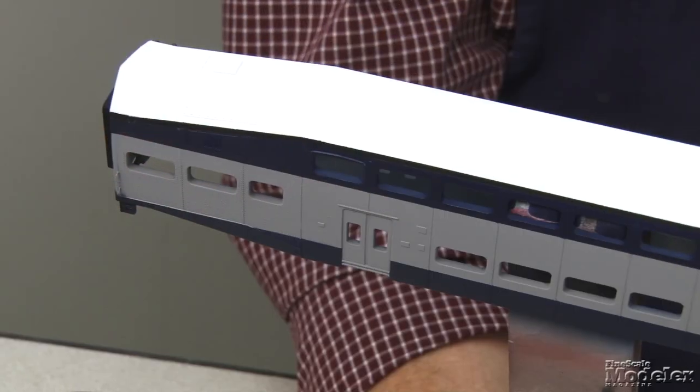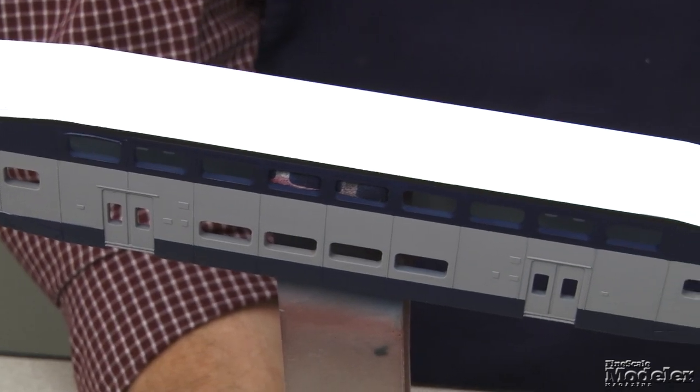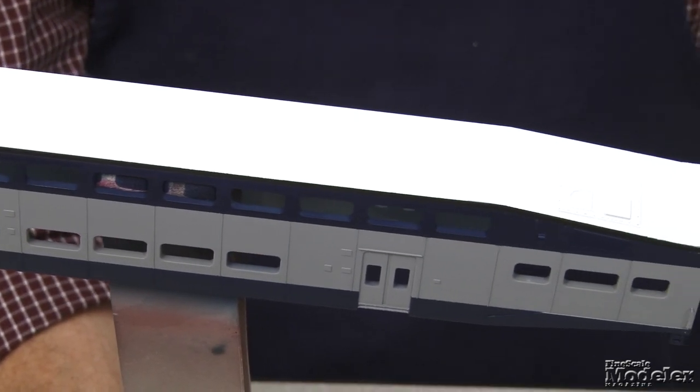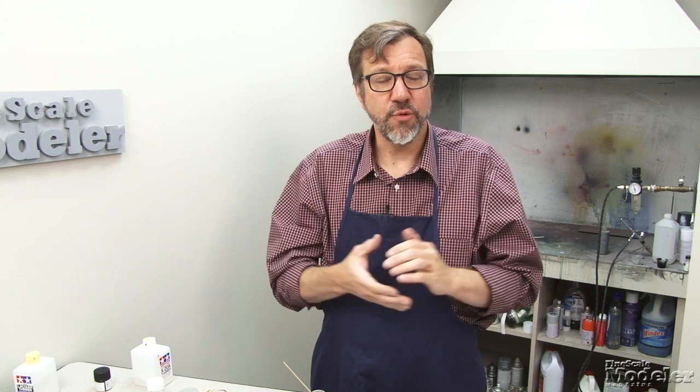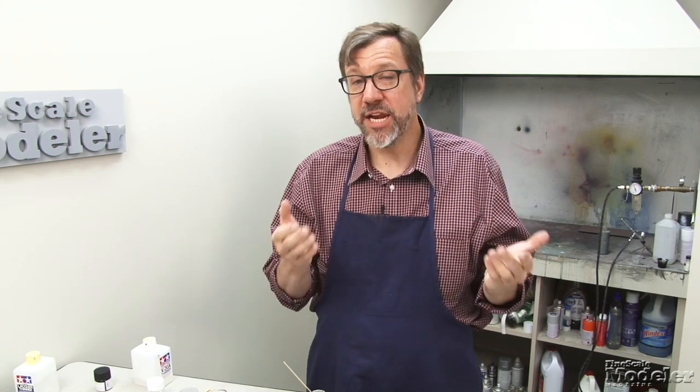So the passenger car is looking pretty good. We've got some other details that we need to figure out, and we're going to do those by hand painting. So let's get to that. Along the way, we'll give you a couple tips about painting with a brush.